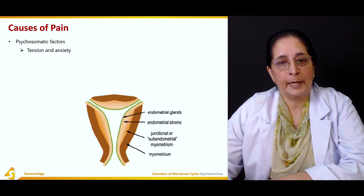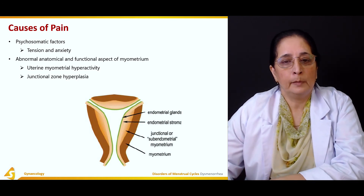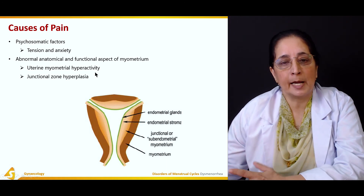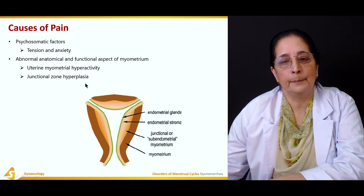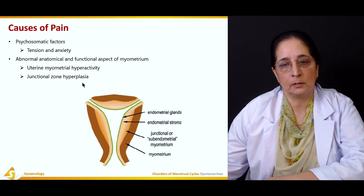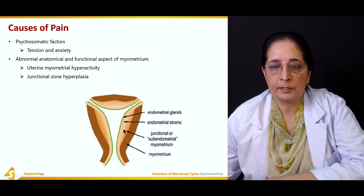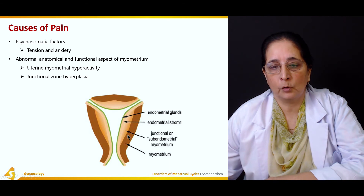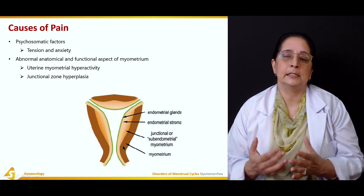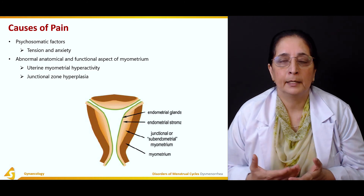The causes of pain include psychosomatic factors like tension and anxiety, and abnormal anatomical and functional aspects of the myometrium, such as myometrial hyperactivity or junctional zone hyperplasia — excessive growth of the junctional zone also leads to pain. Looking at the layers, these are the endometrial glands, endometrial stroma, then the sub-endometrial myometrium junction, and then the myometrium. Any hyperactivity, hyperplasia, or hypersensitivity of the myometrium can lead to pain.